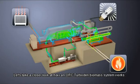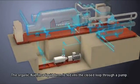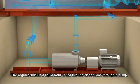Let's take a closer look at how an ORC turboden biomass system works. The organic fluid in liquid form is fed into the closed loop through a pump.